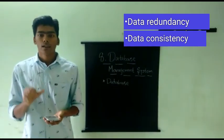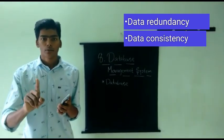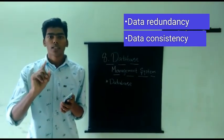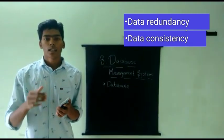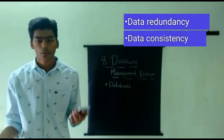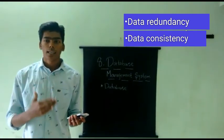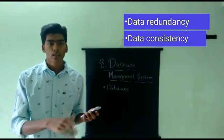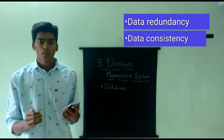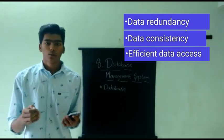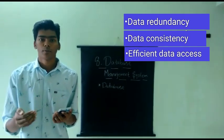If we have data consistency, the data is consistent, stable. If we have a database in DBMS in a central manner, then the data has a unique address. If you need to update the data, you update it in one place. The third point is efficient data access — you can use data access through DBMS.